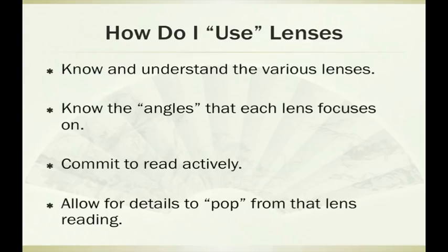So how do we use lenses? It's nothing physical — it's not like you put on a pair of sunglasses and all of a sudden you can see certain things. These are mental constructions that we have to think about as we are reading. We have to know the names of these and understand what each lens asks us to look for. We then need to commit to read actively. We tend to just move our eyes over a chapter, get to the end of it, and say, 'What did I just read?' — you have fake read. We want to push you to read actively, interacting with the text, paying attention to what its message is. These lenses allow certain details to kind of pop out from the text with each different lens reading.